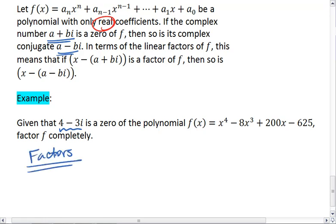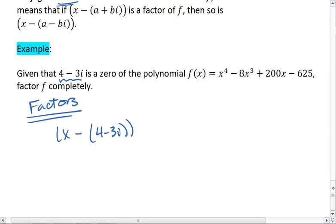Well, we already know two of the factors. We know that x minus 4 minus 3i is a factor, as is x minus the complex conjugate 4 plus 3i.